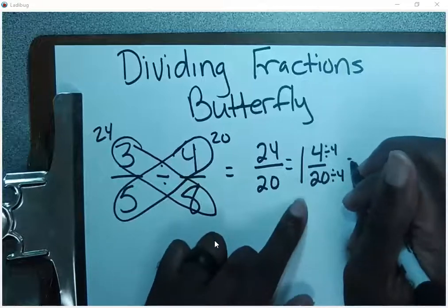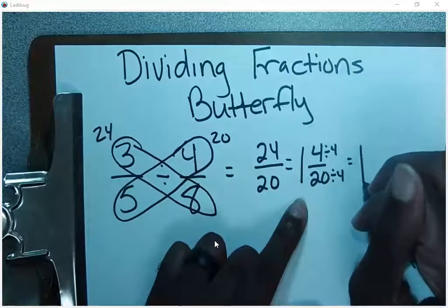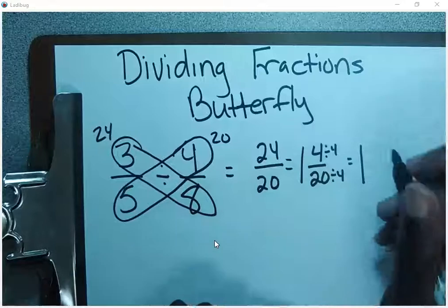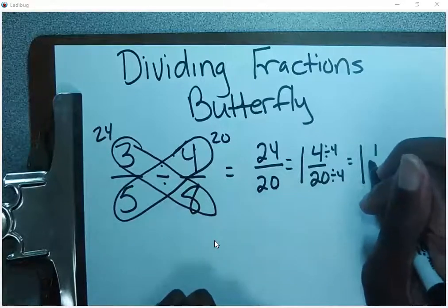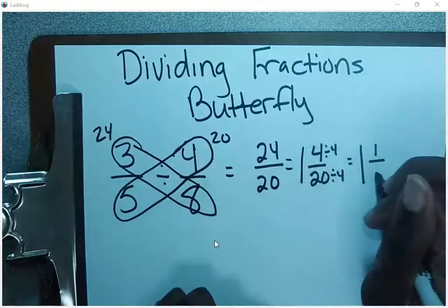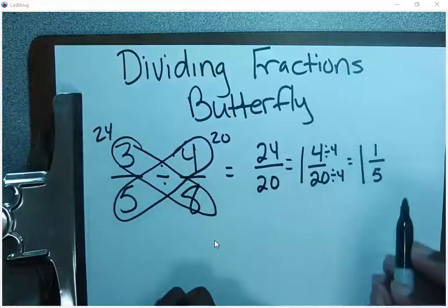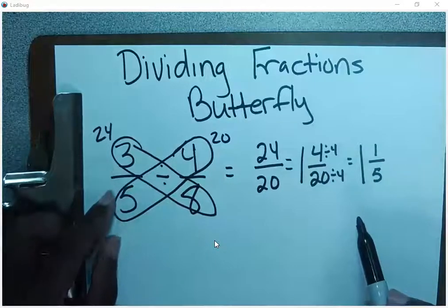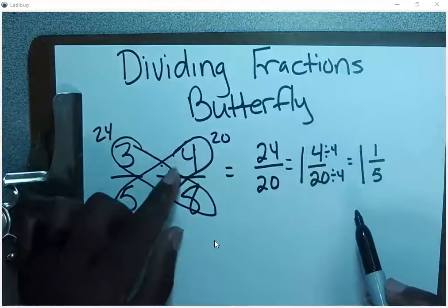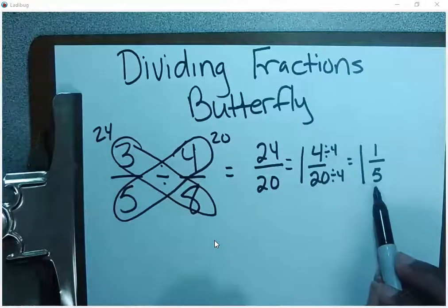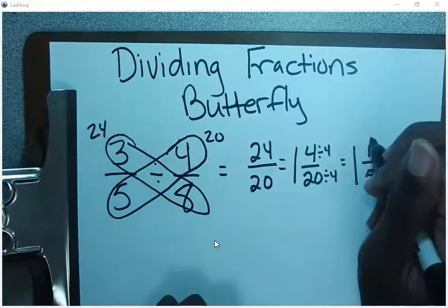My whole number, I keep the same. I don't make any changes to that. Four divided by four gives me one. 20 divided by four gives me five. So now I can say that three-fifths divided by four-eighths will equal one and one-fifth as my answer.